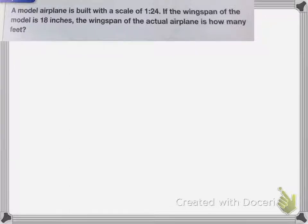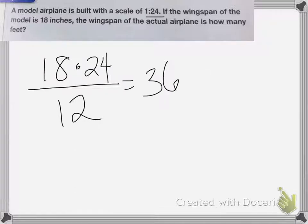A model airplane is built with a scale of 1 to 24. If the wingspan of the model is 18 inches, the wingspan of the actual airplane is how many feet? The scale indicates that the dimensions of the actual airplane are 24 times the scale of our model. The model is measured in inches, but the question asks for the wingspan in feet. So we're going to divide our product of 18 and 24 by 12. We're going to do the 18 inches times that by the 24 and divide that by 12. So my answer is 36 feet.